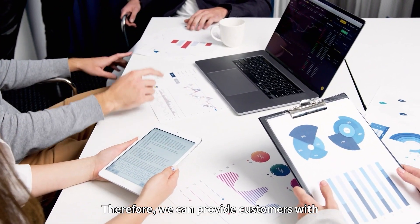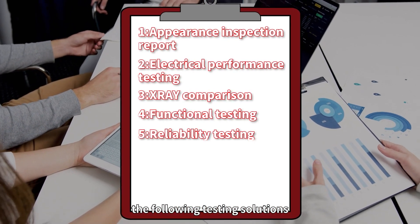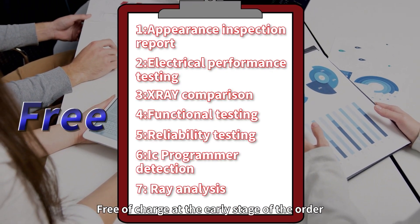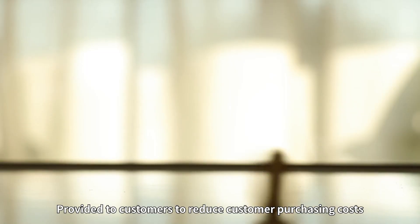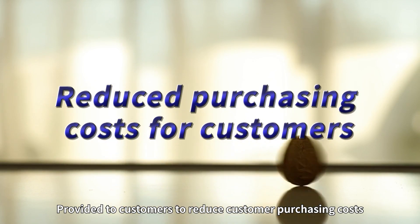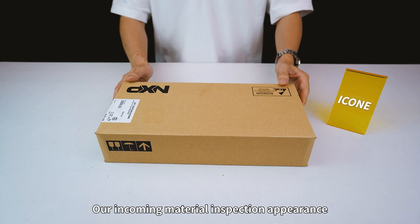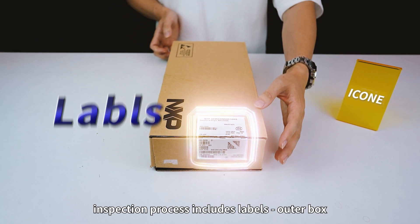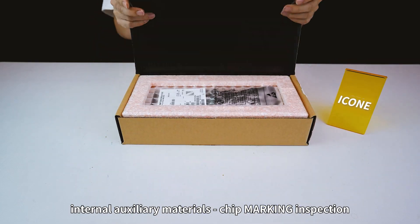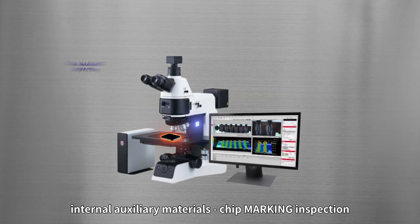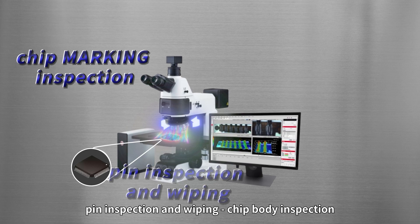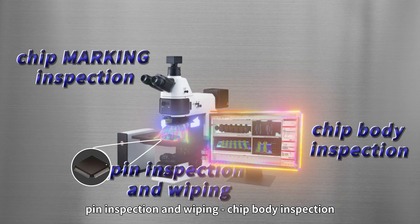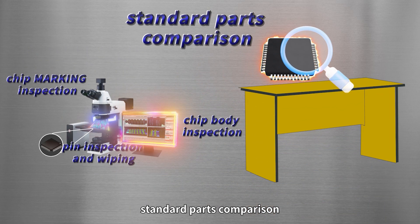We can still conduct in-depth screening and analysis of components through technical ways. Therefore, we can provide customers with the following testing solutions free of charge. The early stage of order provided to customers reduces customer purchasing cost. Our incoming material inspection appearance inspection process includes these: labels, outer box, internal auxiliary materials, chip marking inspection, pin inspection and wiping, chip body inspection, and standard parts comparison.